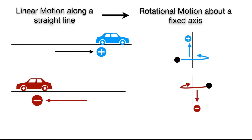The direction of physical quantities related to rotational motion is along the axis of rotation, and this direction is given by the right-hand thumb rule.